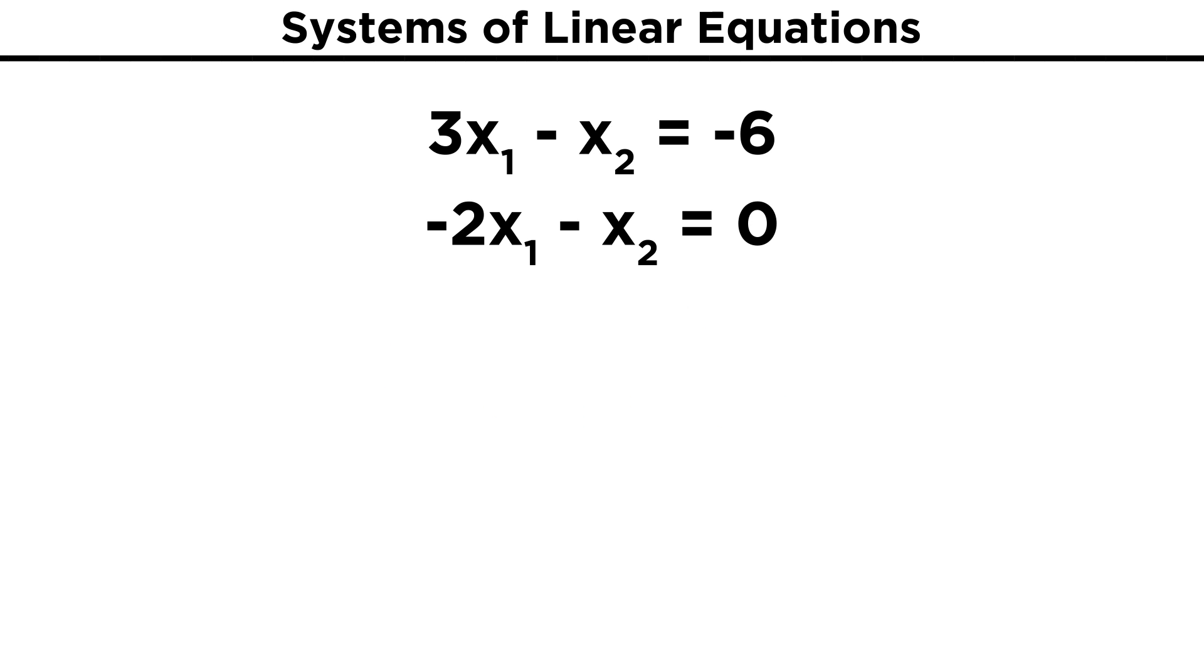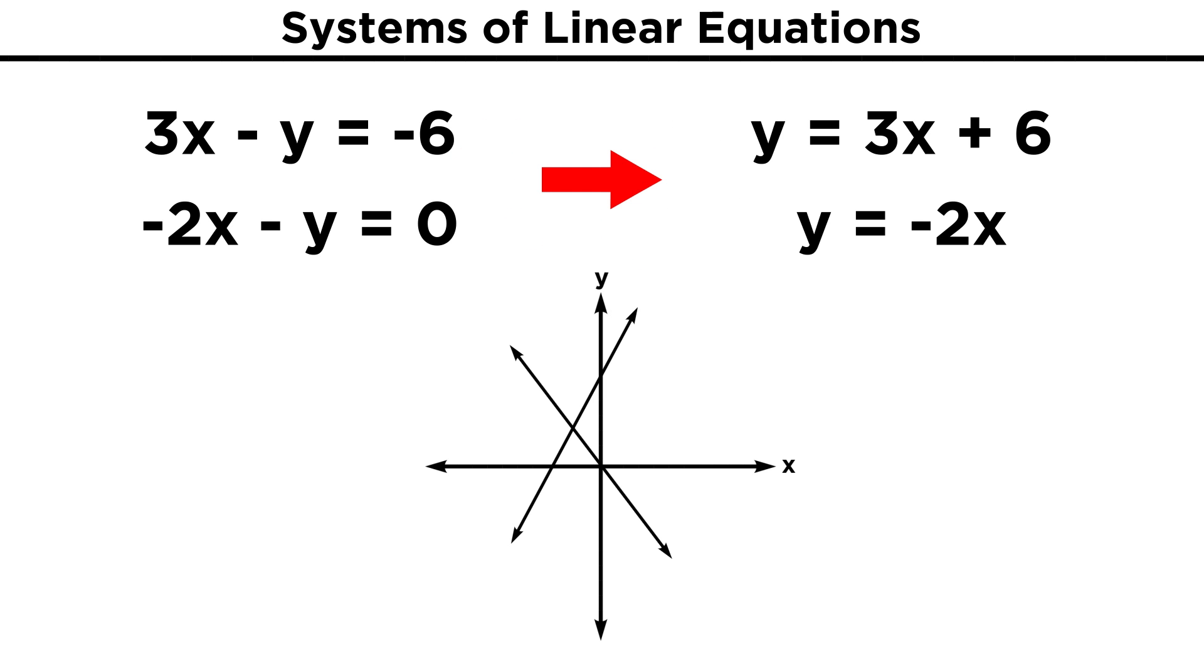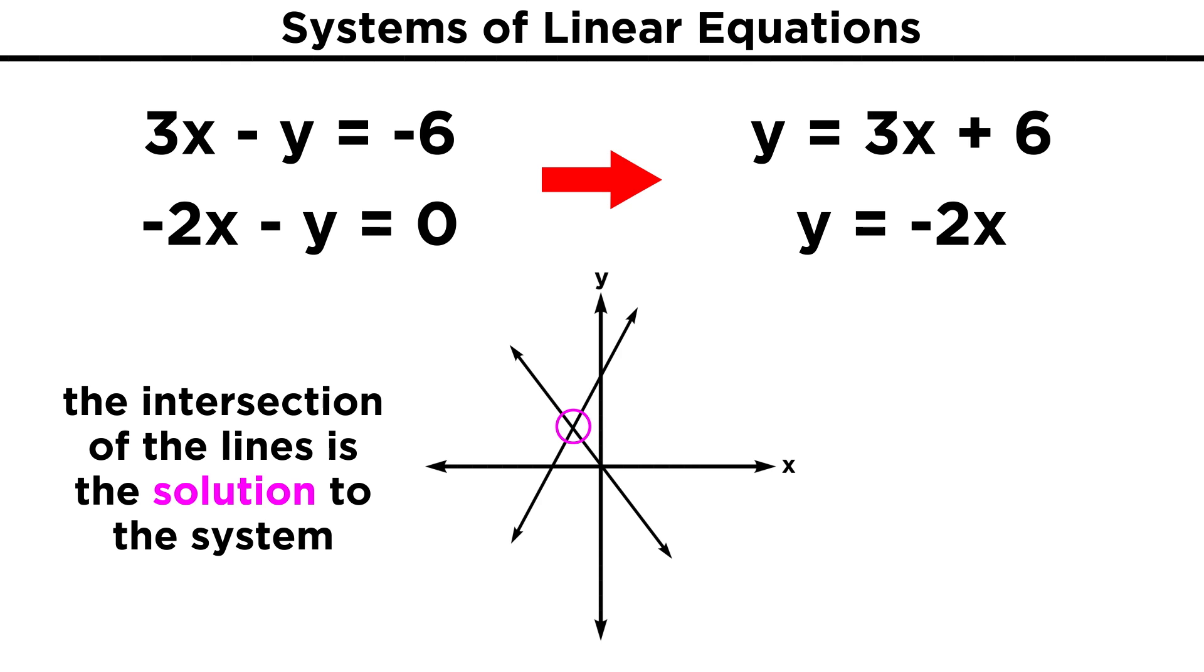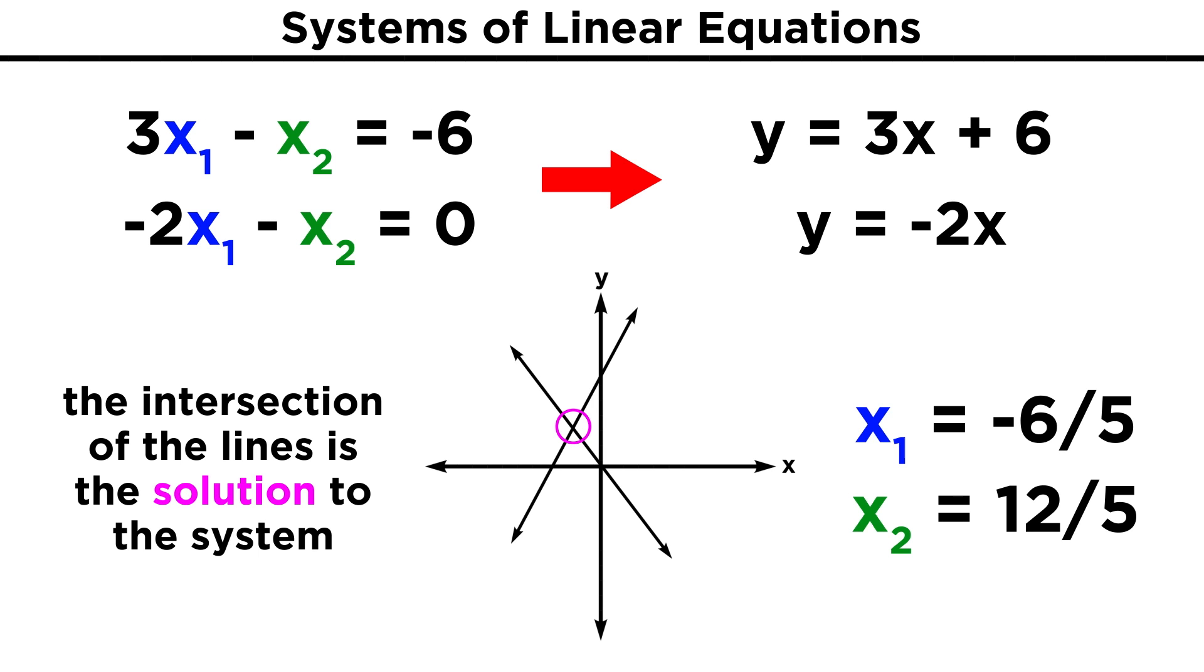Take something like 3x₁ minus x₂ equals negative six, and negative 2x₁ minus x₂ equals zero. We can take x₁ and x₂ to be the same thing as x and y, so we can just solve these for y and graph the lines. We will get y equals 3x plus 6, and y equals negative 2x. If one line is all the points that satisfy one equation, and the other line is all the points that satisfy the other equation, then the point at which they intersect is the solution for the linear system, as the coordinates of that point give us the x₁ and x₂ values that satisfy both equations in the system. If we go through the algebra, we would arrive at negative six fifths for x₁, and twelve fifths for x₂, and that's the unique solution to the system.